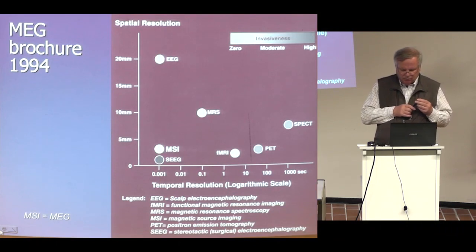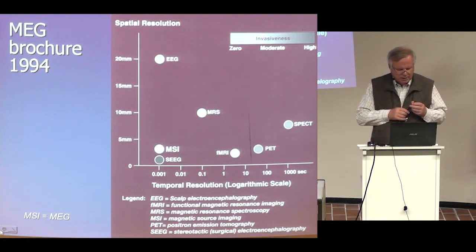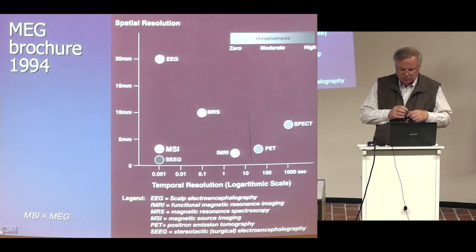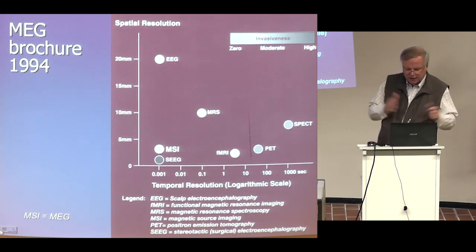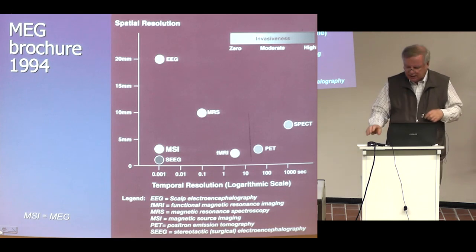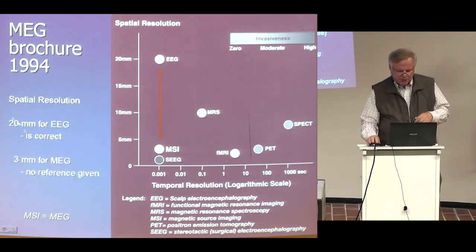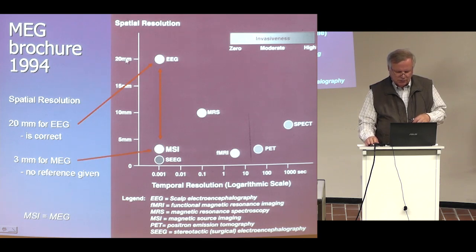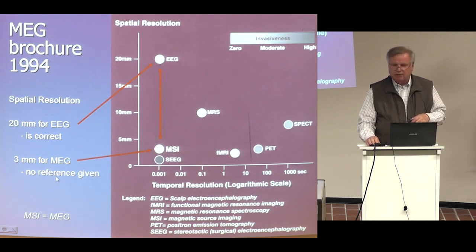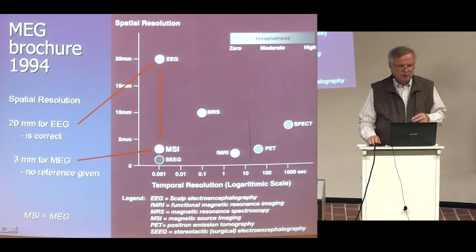Here is an example of good marketing. In 1994, one company producing magnetic brain imaging equipment had a nice brochure claiming spatial resolution for EEG of about 20 mm and for MEG about 3 mm — an order of magnitude better spatial resolution for MEG. But they gave no reference for this result. This was just marketing — poor marketing, with no scientific basis.